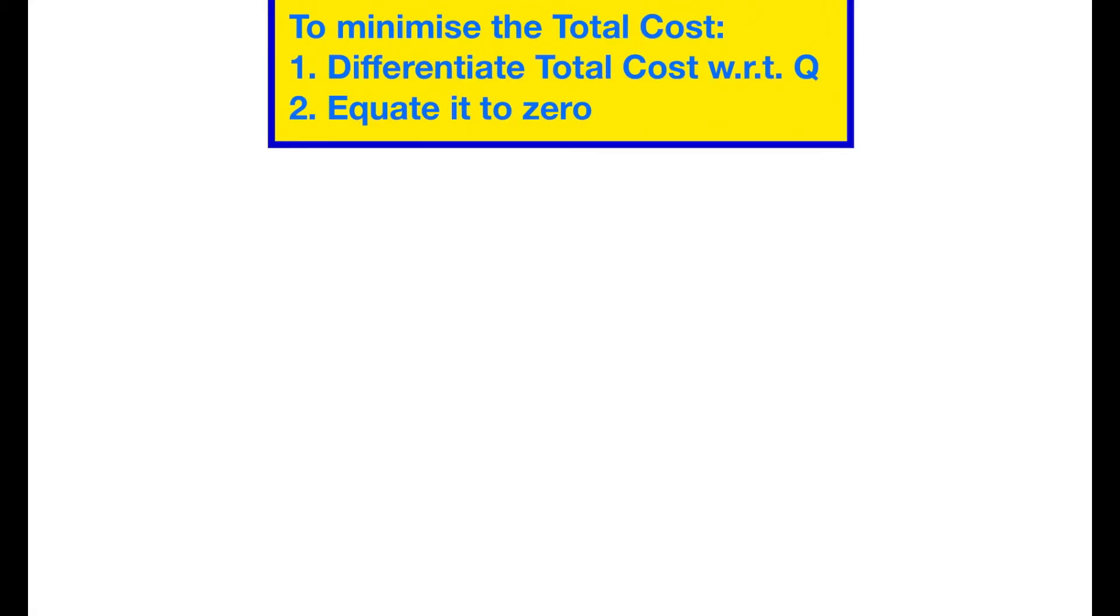So see how we can do it. That means we are supposed to differentiate d by dQ with respect to Q. We are going to differentiate the total cost and put it equal to 0. So let me just put all the equation which we have written here once again. So R by Q multiplied by CO plus Q by 2 multiplied by the holding cost. So this has to be differentiated and kept equal to 0.